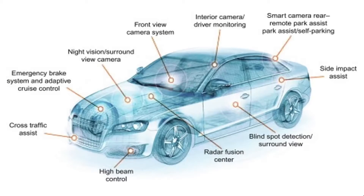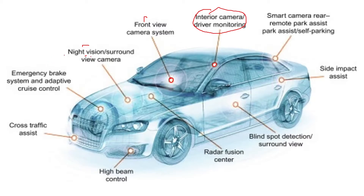Looking at the system of a car, you can see many electronic controls. Some of them are mentioned here: you can have an interior camera, a front-view camera system, and a night vision surround-view camera — you can have it here, here, and here.